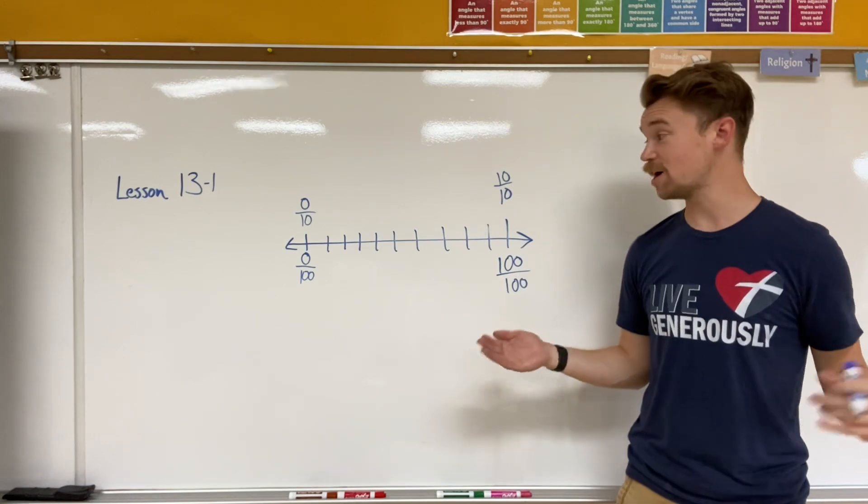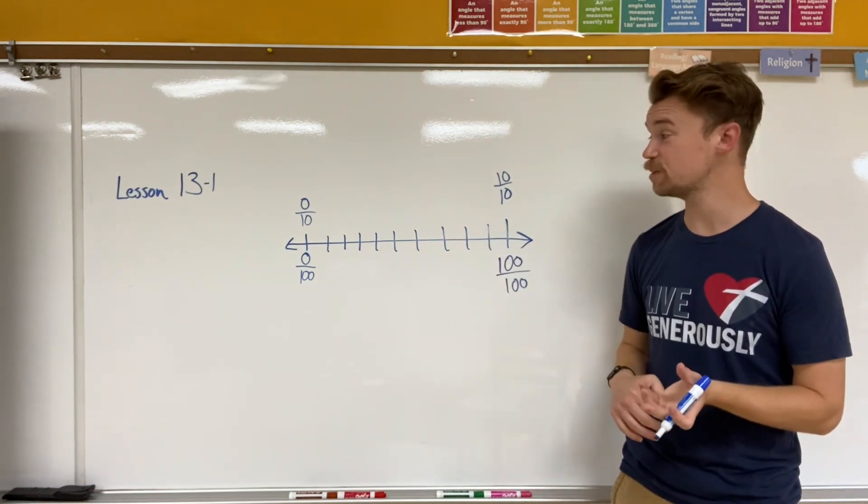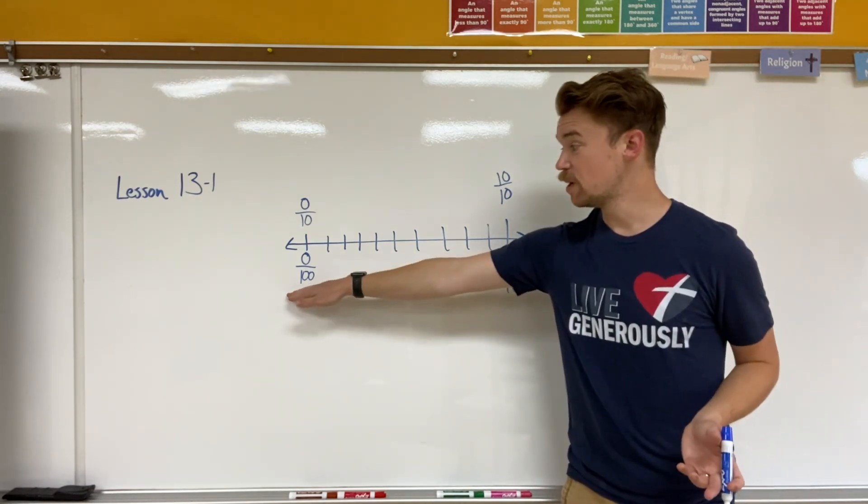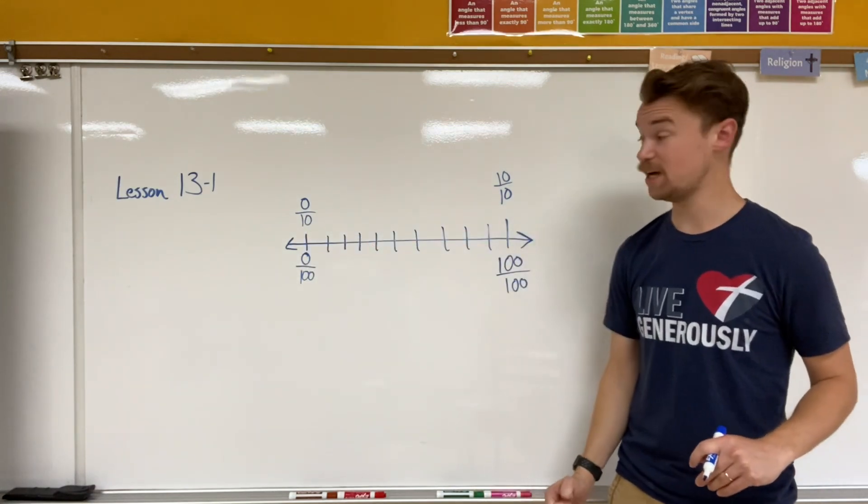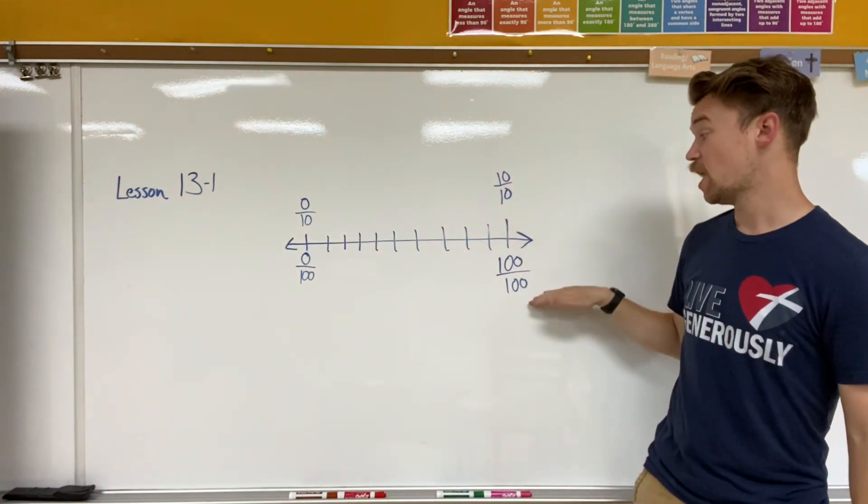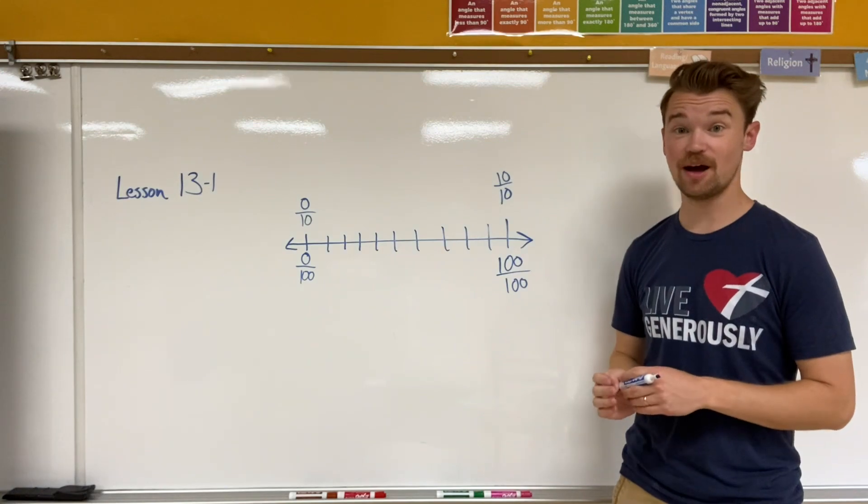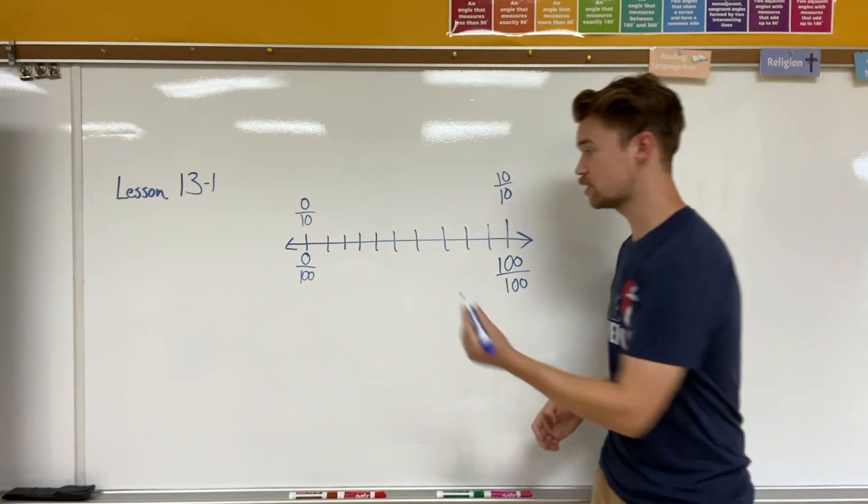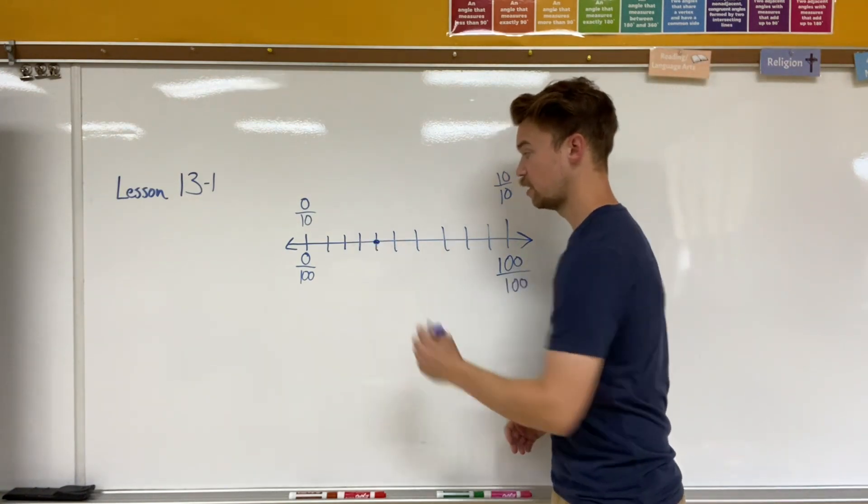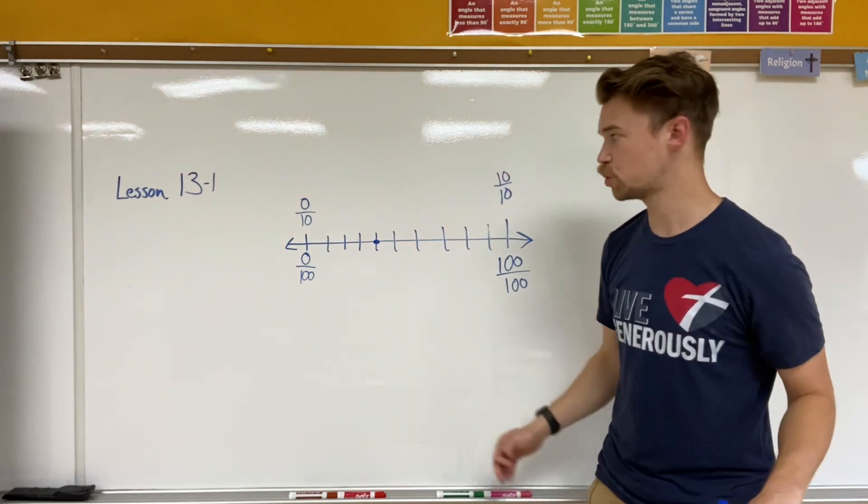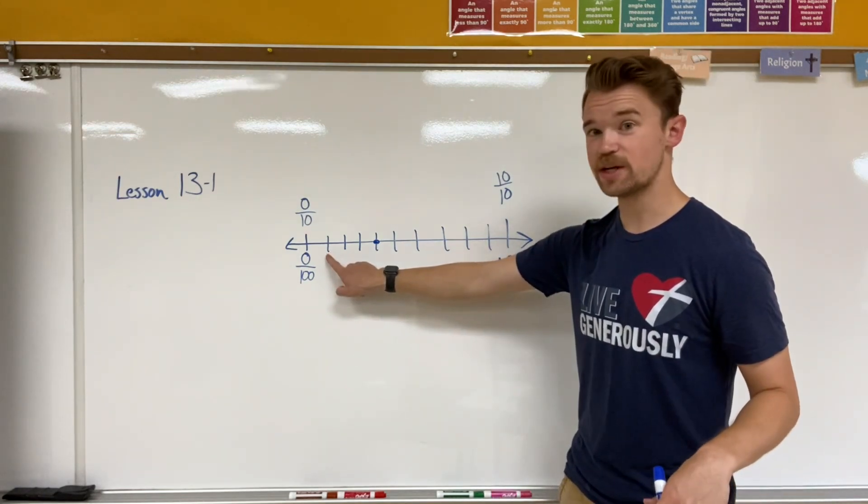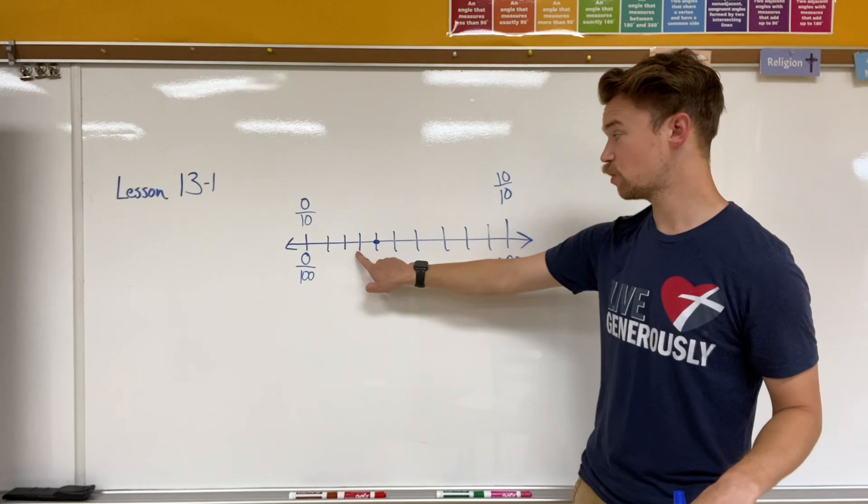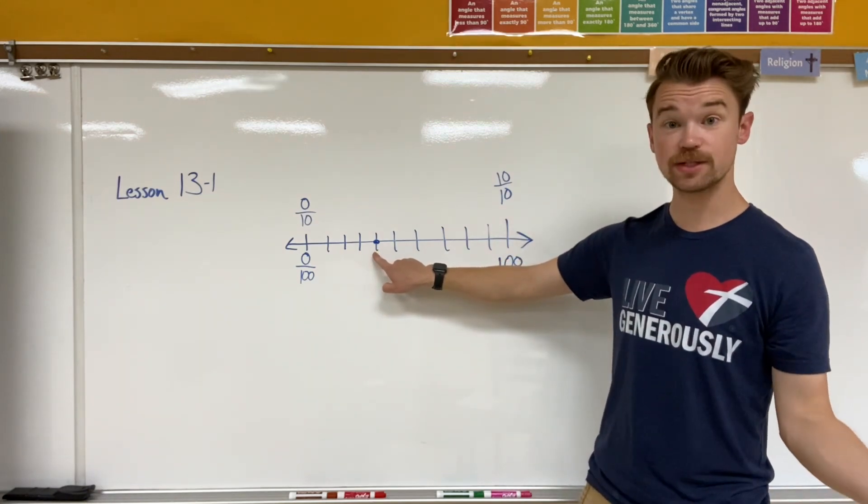You also might come across a number line that looks very similar to this. It starts off with the value of zero hundredths and zero tenths on this side, and ten tenths and one hundred hundredths on the other side. And I might have a dot somewhere in the middle here. Well, we can surely count to where the dot is. One, two, three, four. What would that be in hundredths?